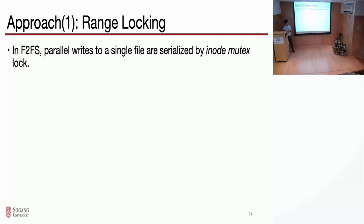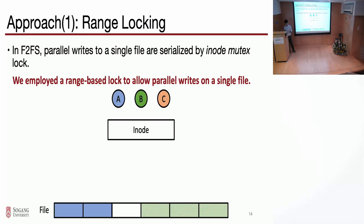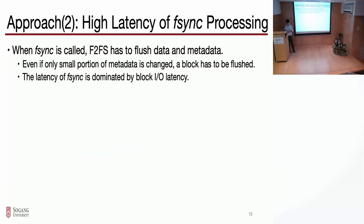To solve these problems, the first approach we take is employing a range-based locking mechanism. To allow parallel writes on a single file, we have to manage multiple regions which are not overlapping. We implemented the range-based locking mechanism using an interval tree, so that when the first thread is trying to write the head of the file, we can grant a lock. When the second thread tries to write a non-overlapping region, we can also grant a lock. But when a third thread is trying to write an overlapping region, we can immediately know that it overlaps with thread B, so that we can block that thread.